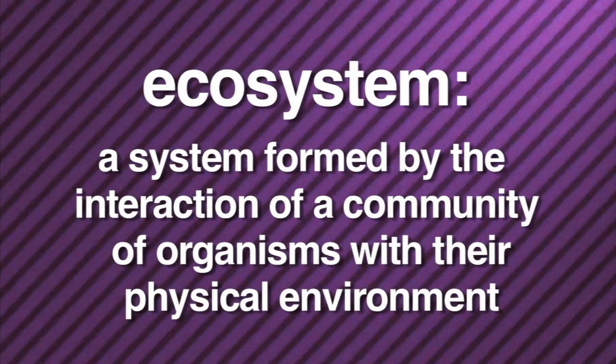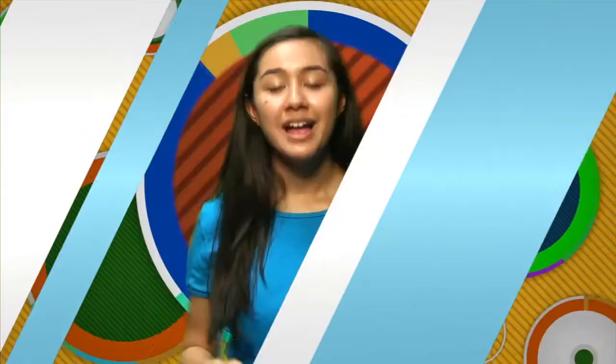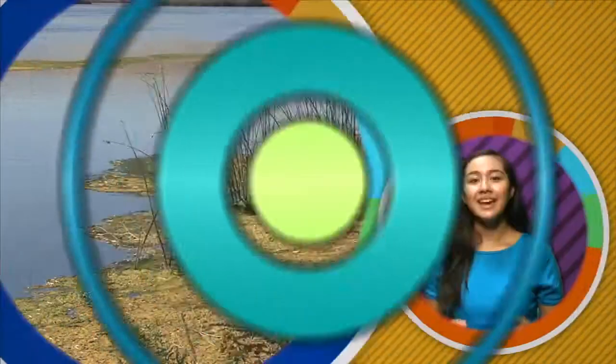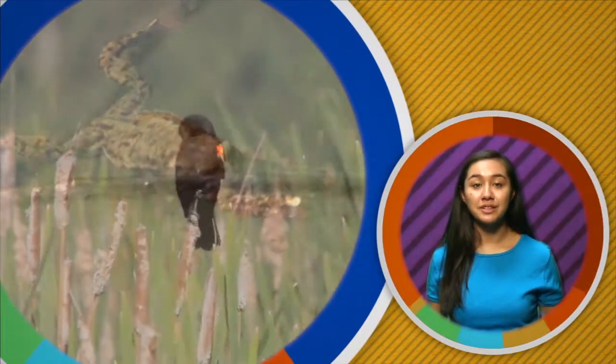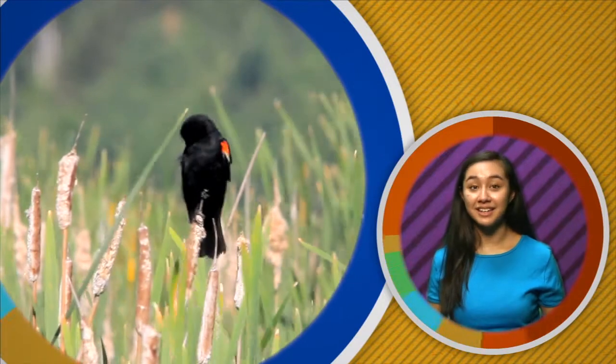So exactly what is an ecosystem? An ecosystem is a system formed by the interaction of a community of organisms with their physical environment. Take this pond for example. Everything you see here — the water, the ground, the plants and animals living in and near the water — is an ecosystem.